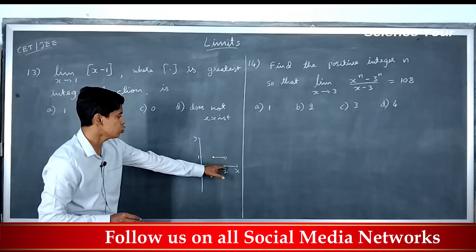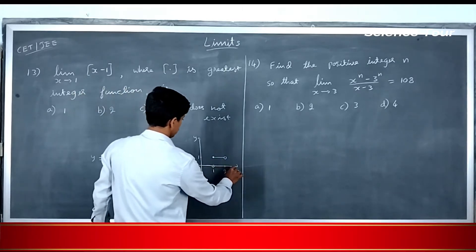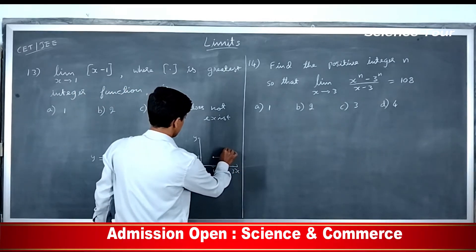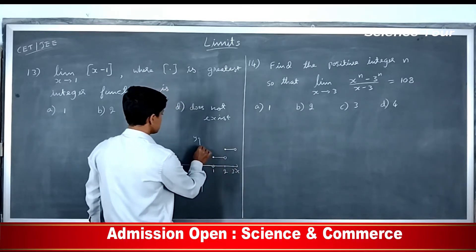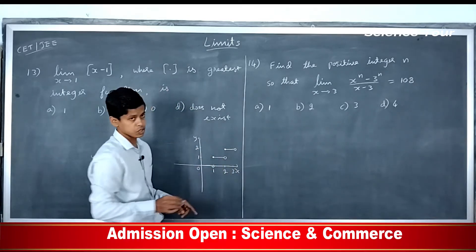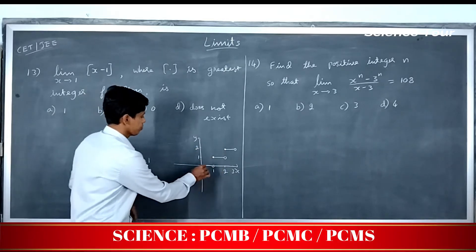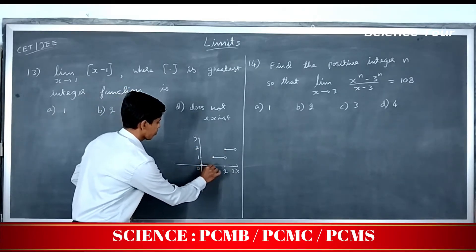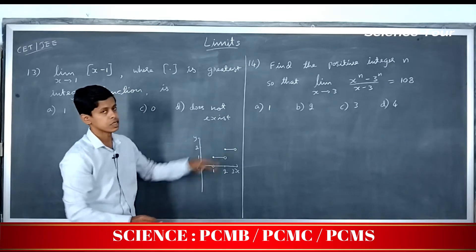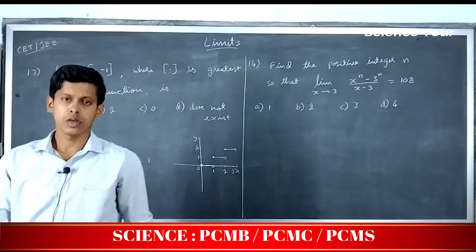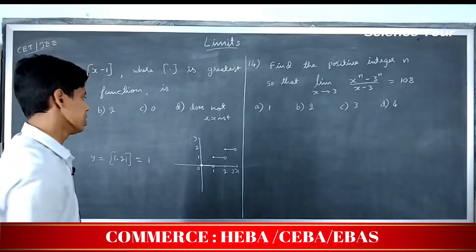But at 2, it will be 2. So from 2 to 3, that will jump to 2. So 2 to 3, it will be 2. So it is a step function. This is the first step, second step, third step. I hope you know very well the greatest integer function.